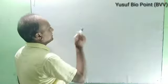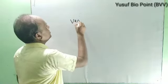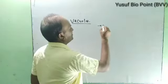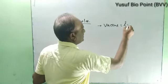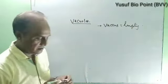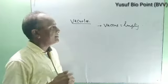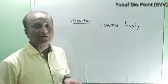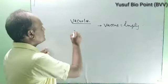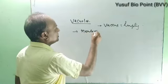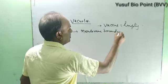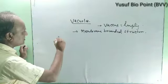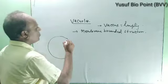The next structure is vacuoles. The word vacuole comes from 'vacua', meaning empty. Scientists first thought it was an empty space, but later it was found that it is not empty — it contains several sac-like structures. It is a membrane-bounded structure, and this membrane is called the tonoplast.